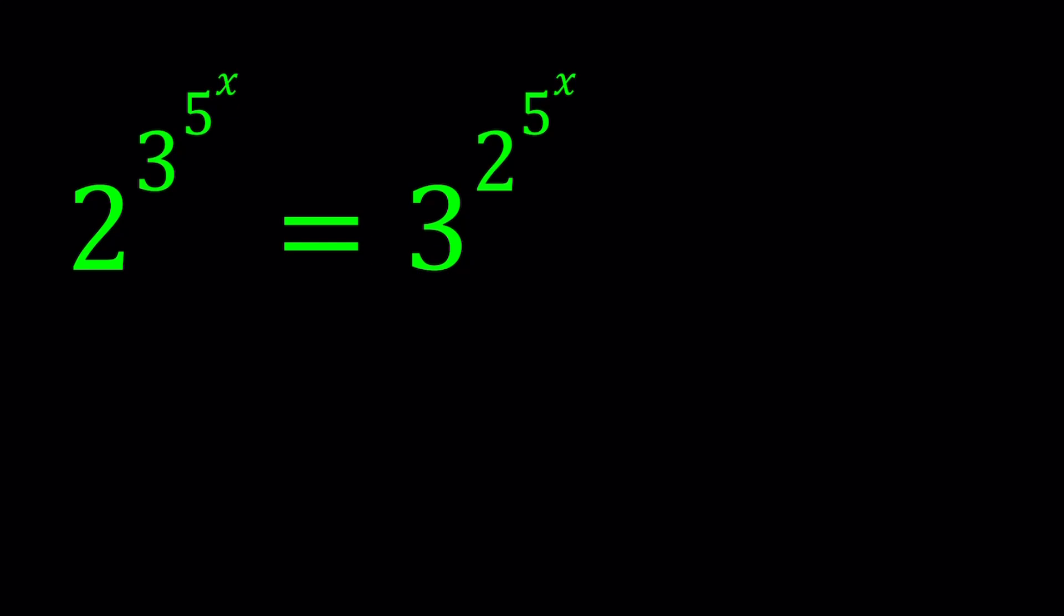So let's start by ln-ing both sides. ln is natural logarithm, so I'm just going to go ahead and ln 2 to the power 3 to the power 5 to the power x, and ln 3 to the power 2 to the power 5 to the power x.